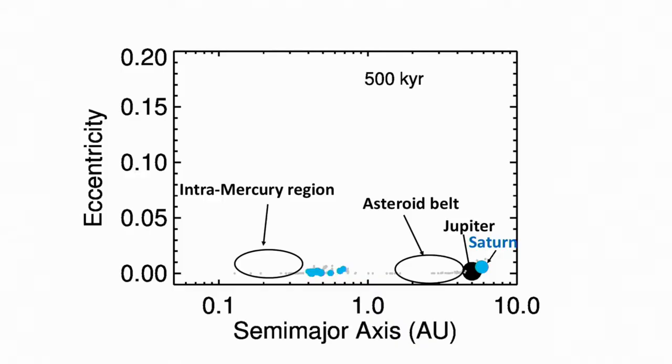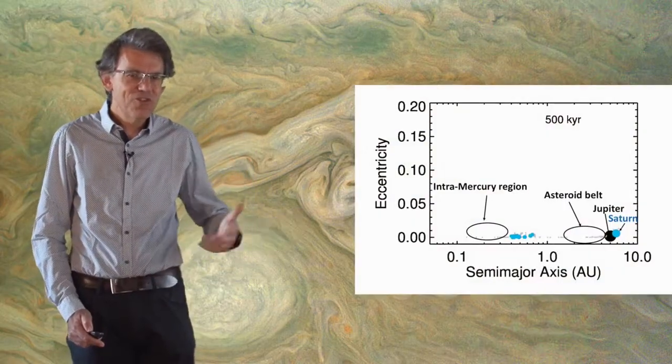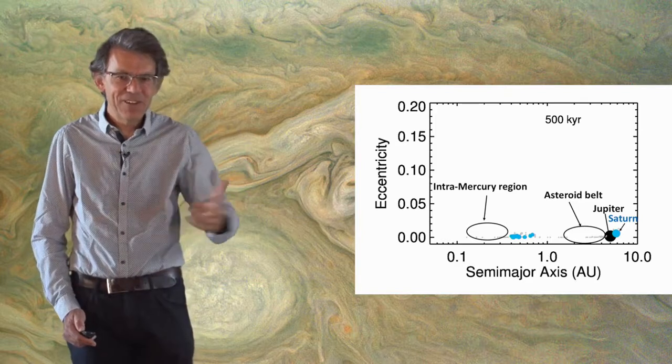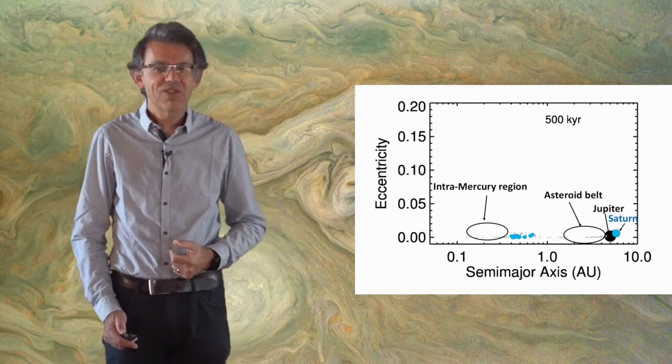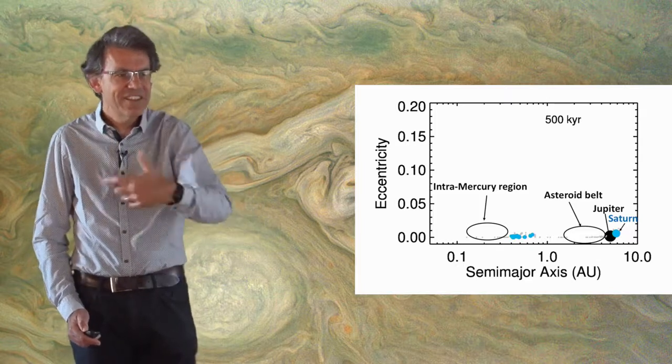It explains why the region inside the orbit of Mercury is totally depleted of embryos and planetesimals. It explains why the asteroid belt between two and four AU contains only a few planetesimals. It can explain the formation of the core of Jupiter—which would actually be the super-Earth that migrated from 0.1 AU to 5 AU—and even the formation of the core of Saturn as a result of material shepherded in resonance with the outward migrating super-Earths.